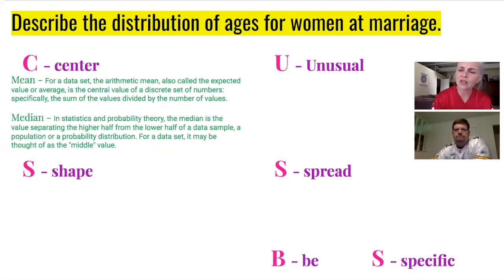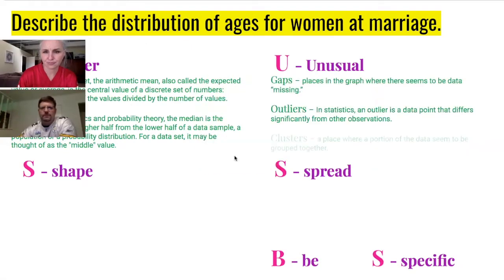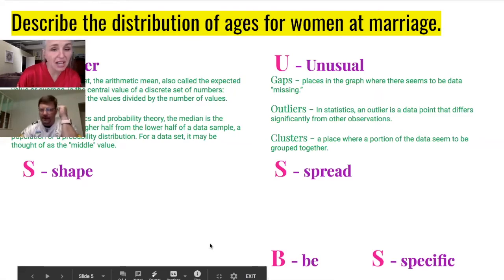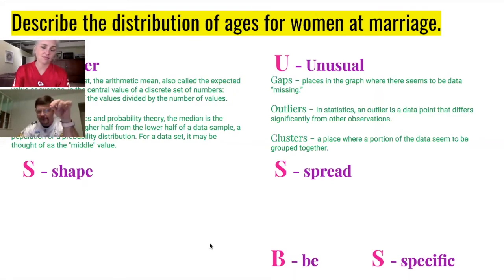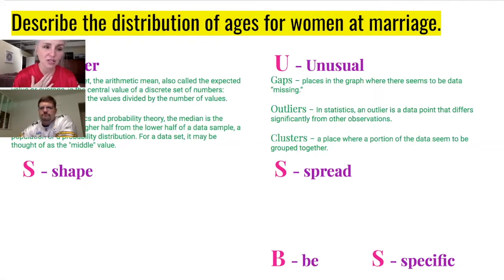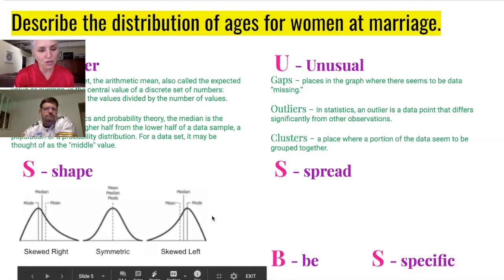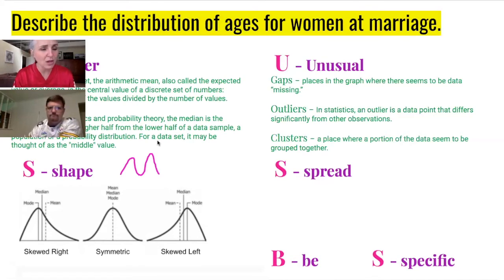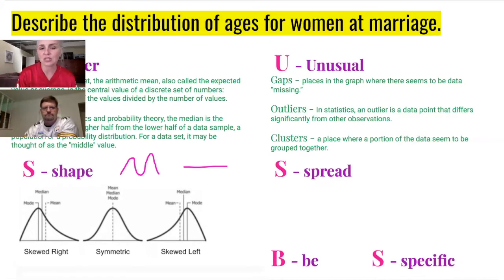After you determine a center, tell the reader about anything unusual you find about the graph — this is where you might discuss outliers, gaps, or unusual things. It's okay to say there's nothing unusual about the data, but you have to say that explicitly. Then you need to talk about shape: skewed right, symmetric, skewed left — but remember it could also be bimodal or approximately uniform.